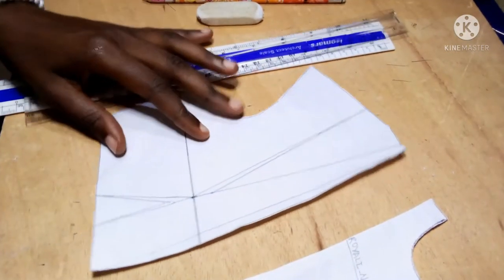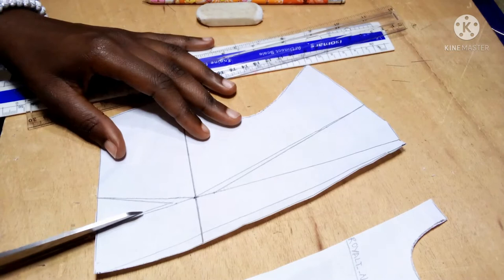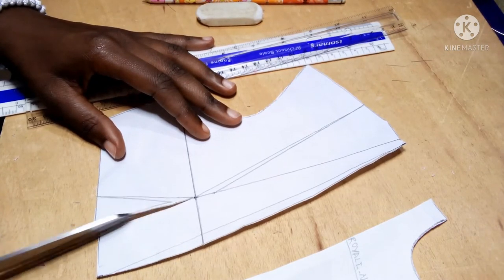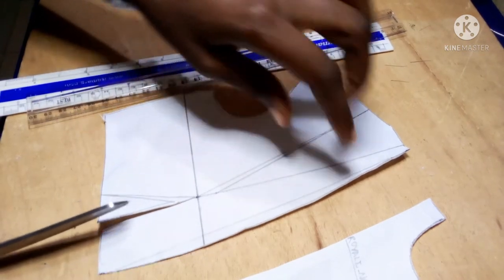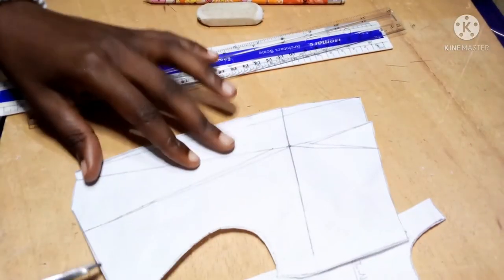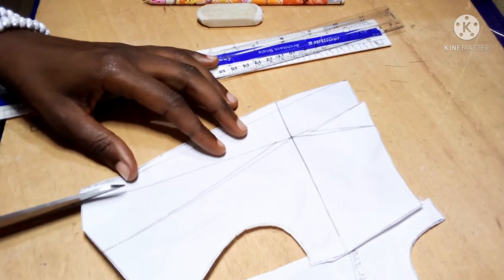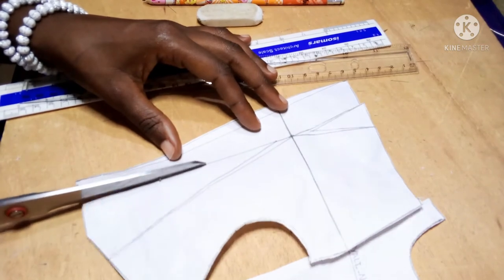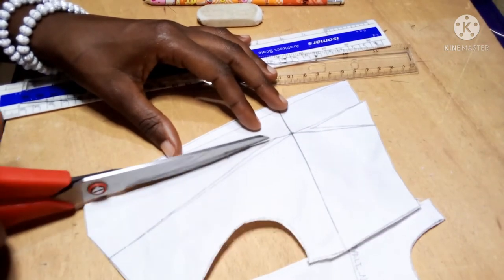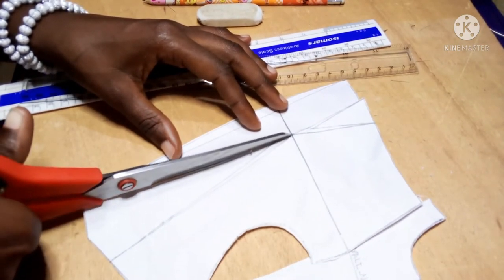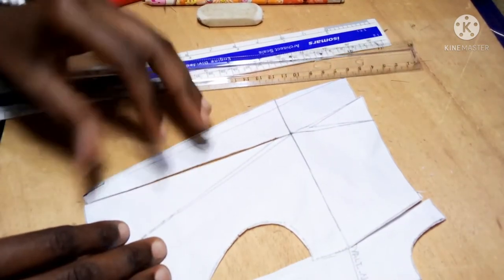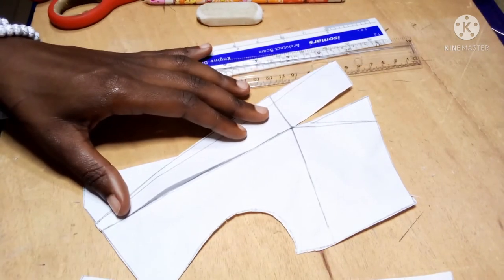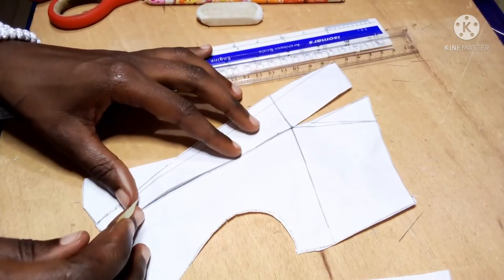This is the side. Now for my waist dart, just cut one part, then for the shoulder dart permit me to flip it over. I have this, you know. Then I can close this dart completely. I just get my tape and I will tape it down.